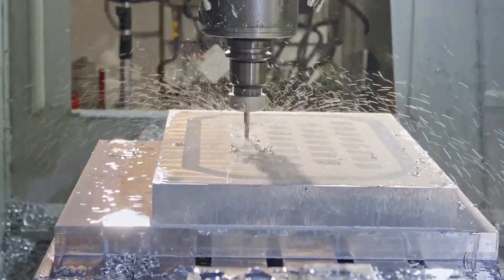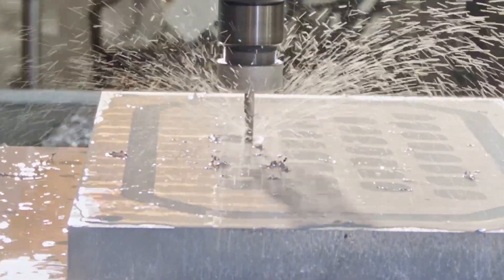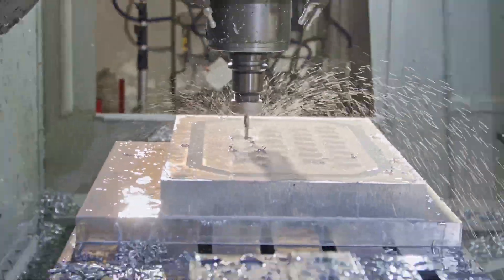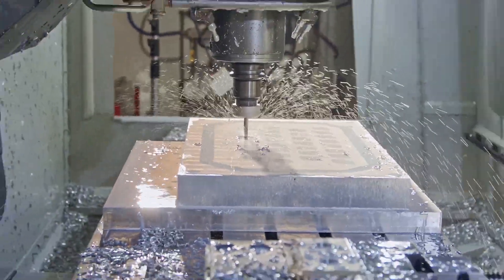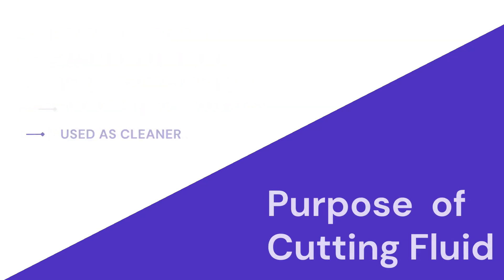By using cutting fluid we can restrict the change of properties of the material because of heat. We can also clear the operation area — if there is dust inside the cutting area that results in uneven cutting, that's why we need to clean the cutting area.